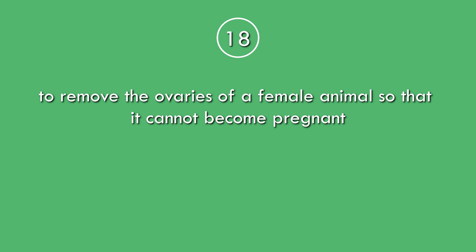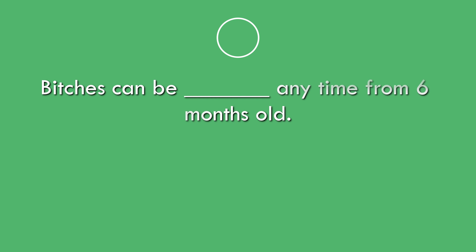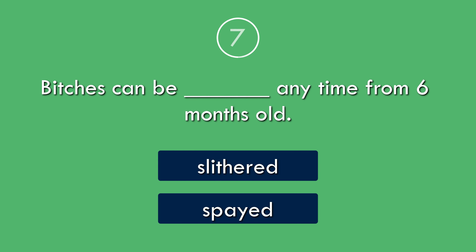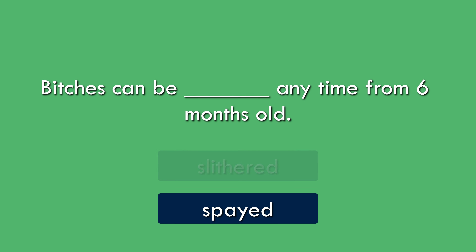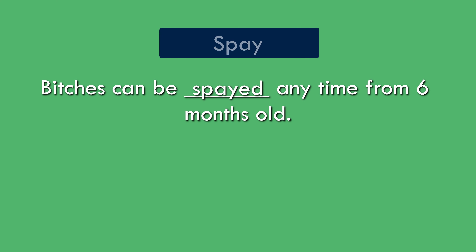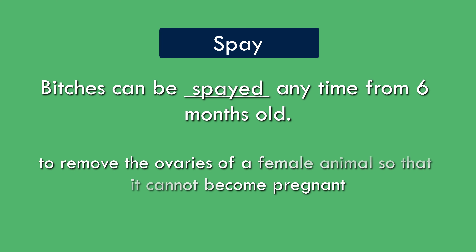Question 18. To remove the ovaries of a female animal so that it cannot become pregnant. To remove the ovaries of a female animal so that it cannot become pregnant. Spay: to remove the ovaries of a female animal so that it cannot become pregnant.